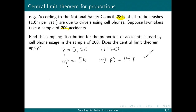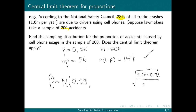The central limit theorem says that P-hat — the random variable that is the sample proportion — is going to be normally distributed with a center of 0.28, the true proportion, and a standard error of the square root of (0.28 times 0.72) all over 200. We can calculate that that is 0.0317. Whenever we're asked what a distribution is, we describe a normal or binomial distribution — that's all we have to do here.